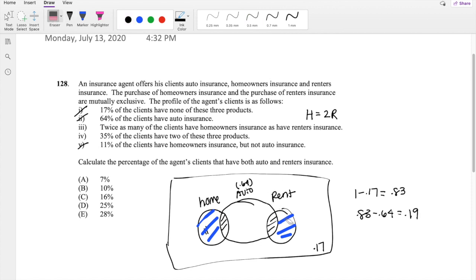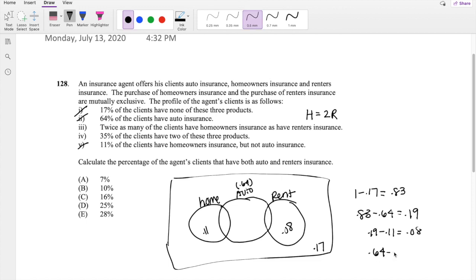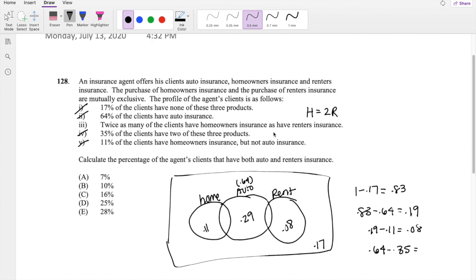So just the renter's insurance, if this part right here is 11%, then this part right here must be 0.19 minus 0.11, which is 0.08. And if we know that this part right here is 35% and this whole thing has to add up to 0.64, just the inside part would be 0.64 minus 0.35, which is equal to 0.29. So 0.29 is right here. So now we just have to take care of this one.